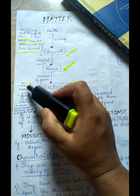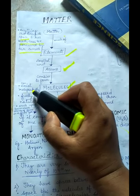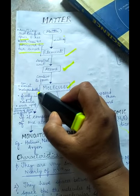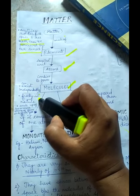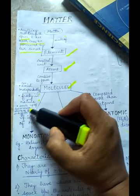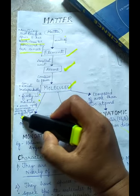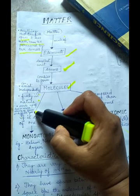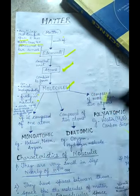Molecules can exist independently — they are free in nature. They are made up of two or more atoms of the same or different type.